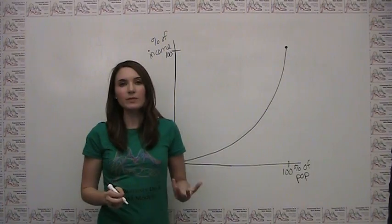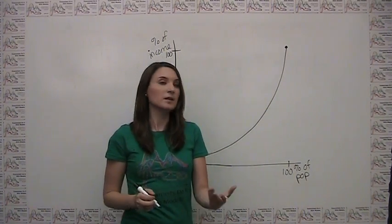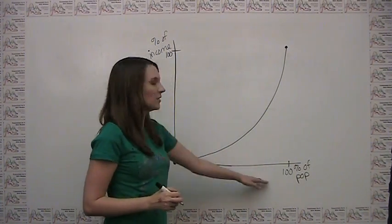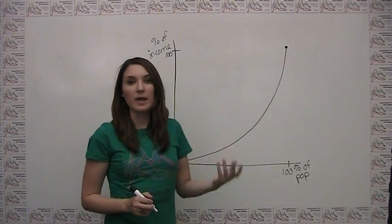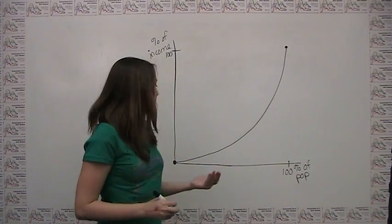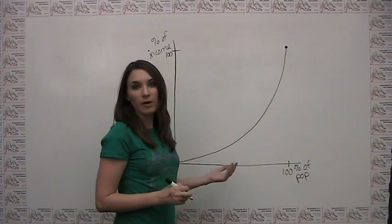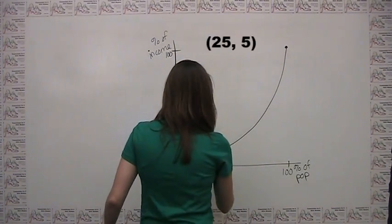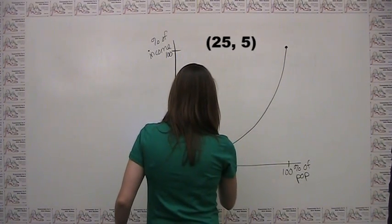Now what we mean by this is, let's say hypothetically, that the bottom 25% of the population makes 5% of the income. That means that the point 25-5 would be on our Lorenz curve, and it would look like something probably about right here.